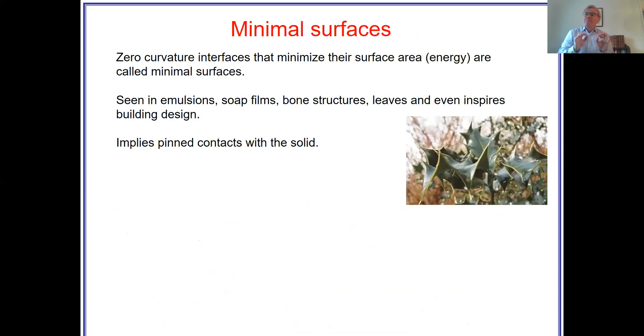So, the definition of a minimal surface is as follows. It is an interface that minimizes its surface area when it is attached, pinned to certain locations like the two soap rings, or an interface in a porous medium where you have an interface that's stuck to the surface. And those are minimal surfaces. They will have a zero average capillary pressure. They will have a zero average curvature, and they do minimize energy. So, we see them in lots of examples. The picture there is the holly leaf that I've already shown. You see these in emulsions, most famously in soap films, bone structure, and it's even been used to inspire building design.